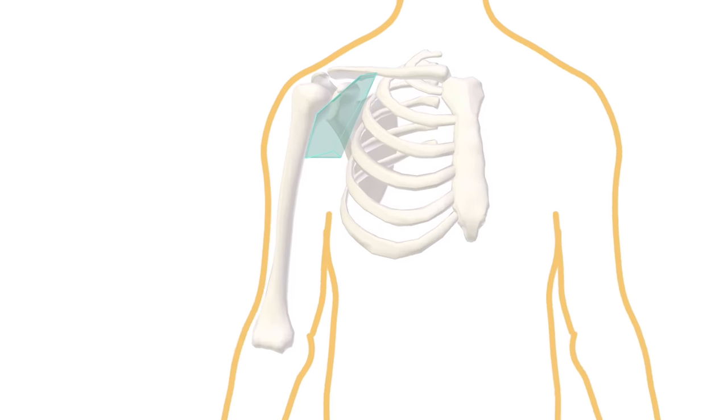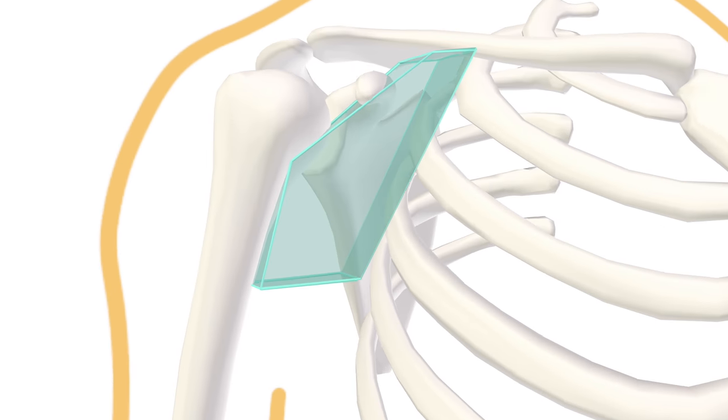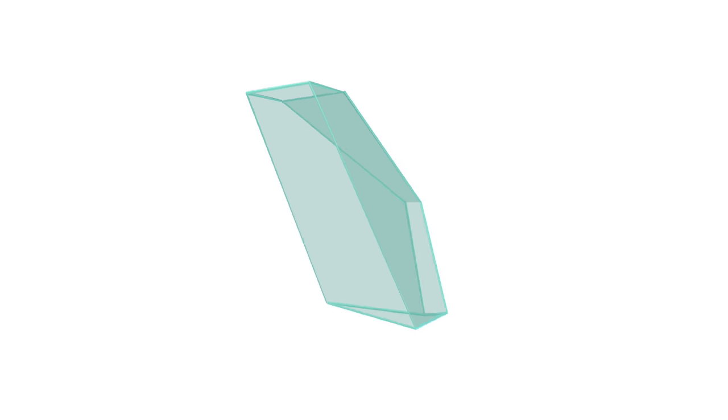This is a 3D prism representing the anatomical space known as the axilla. Axilla is the 17th century Latin term for armpit.